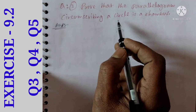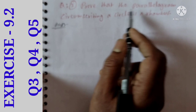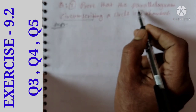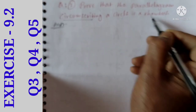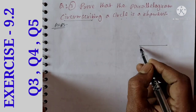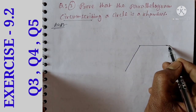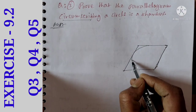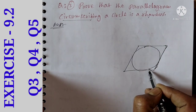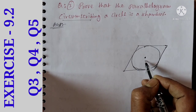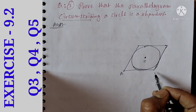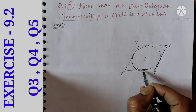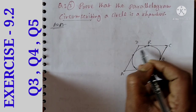Prove that the parallelogram circumscribing a circle is a rhombus. We draw a circle inside parallelogram ABCD with center O. The circle touches the parallelogram at four points: P, Q, R, and S.